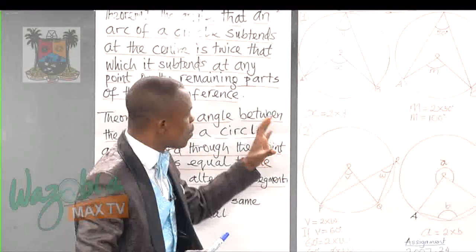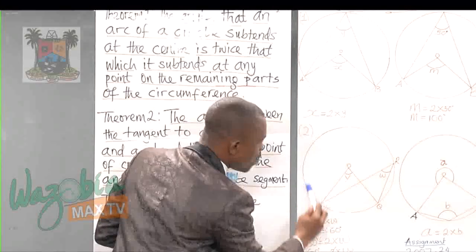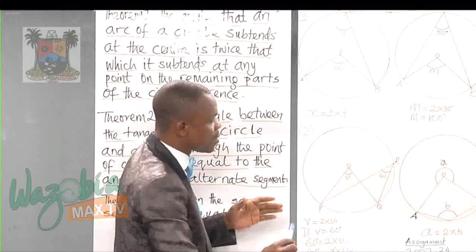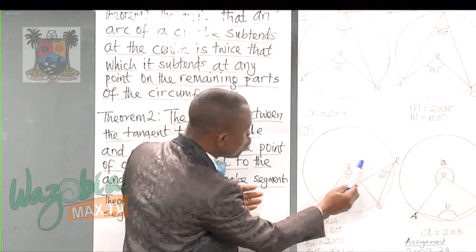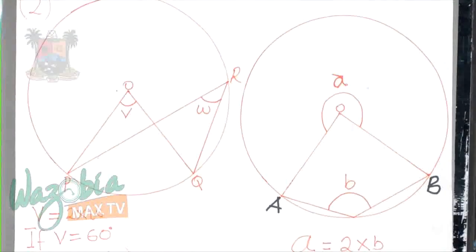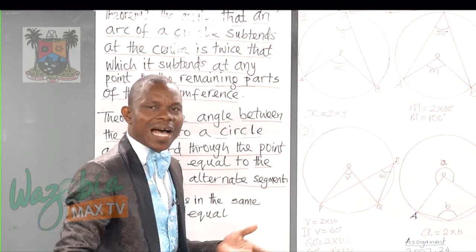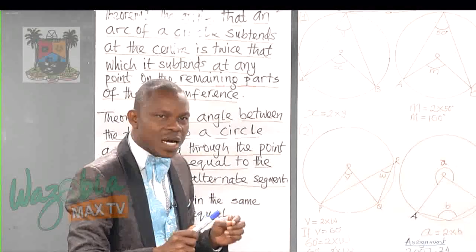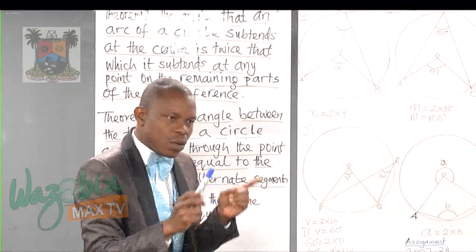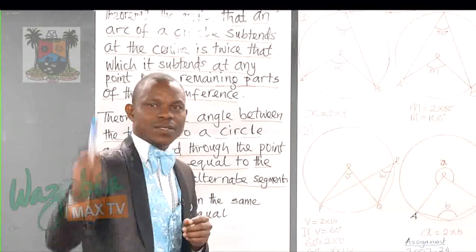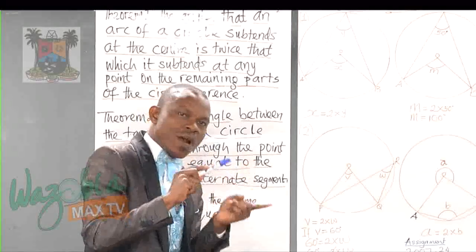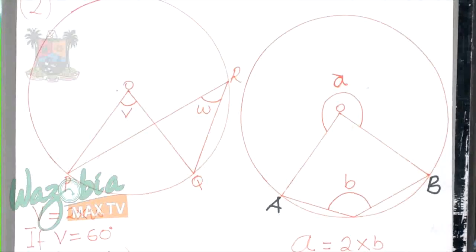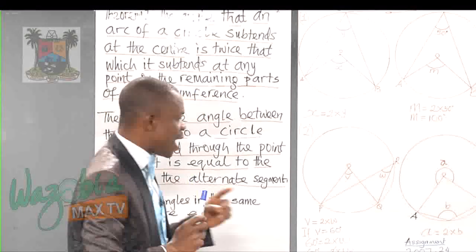The second diagram connected with this theorem is this one. Anytime you see something like this in an objective or theory question, you should understand it is associated with this theorem. For example, if I ask your name and you tell me it is Success, anytime anybody sees your picture, they associate your representation with your name. So anytime you see a diagram like this, this very theorem should come to mind, and that will always help you.